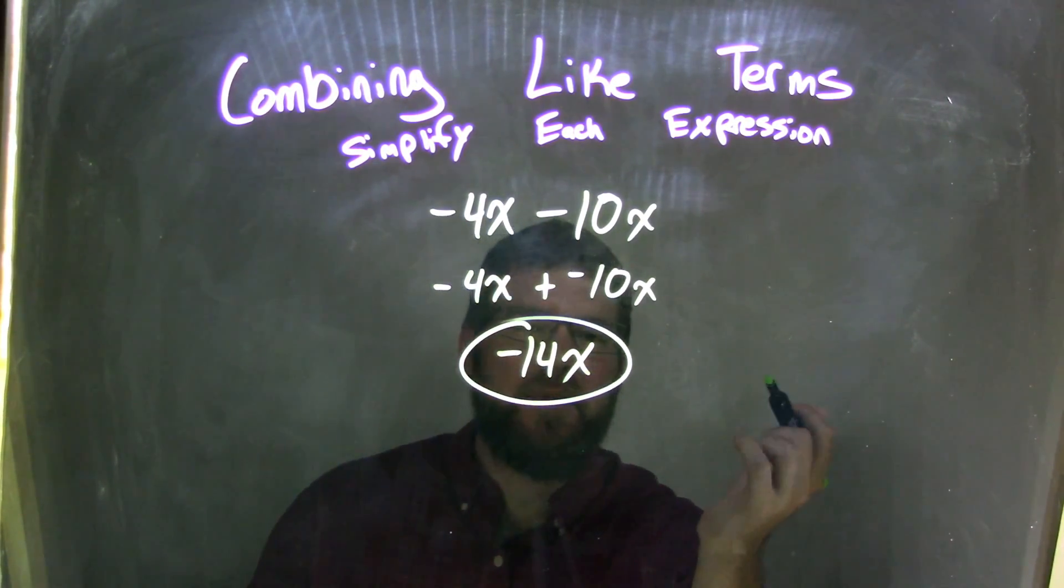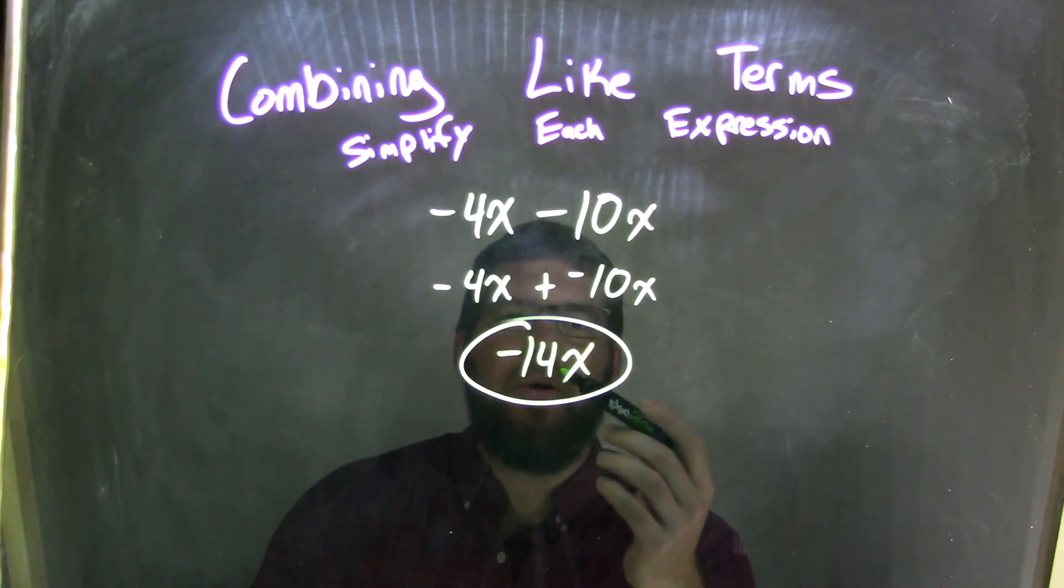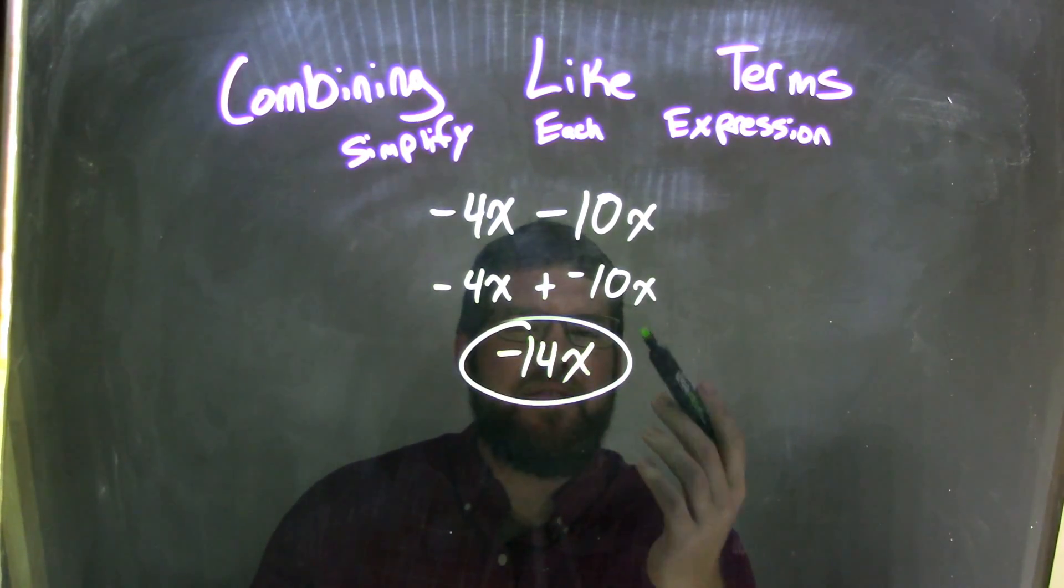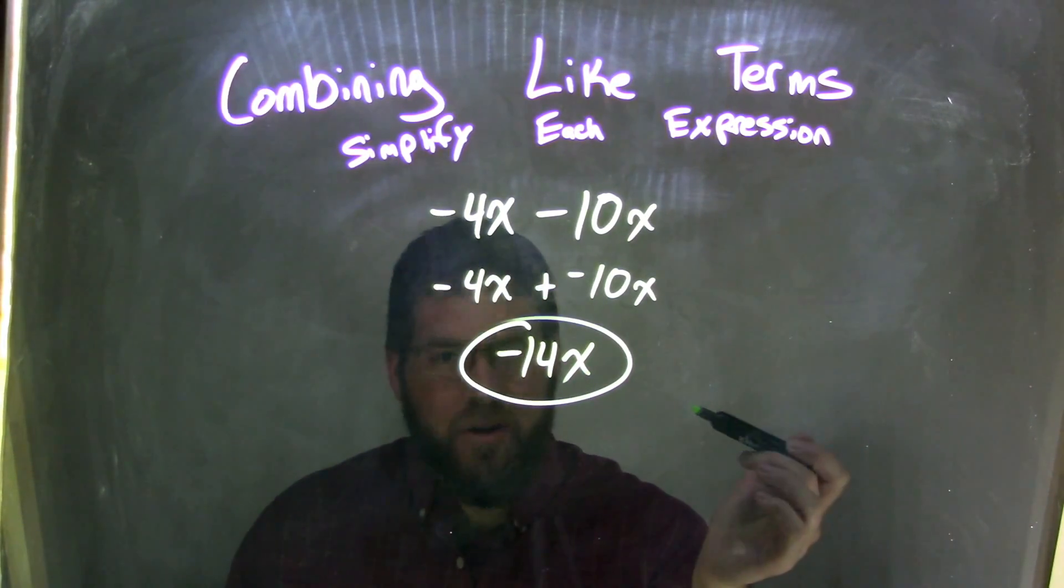I could add negatives easier than I can subtract them. So negative 4x plus negative 10x comes out to be negative 14x. And since there's no other terms there, that is our final answer.